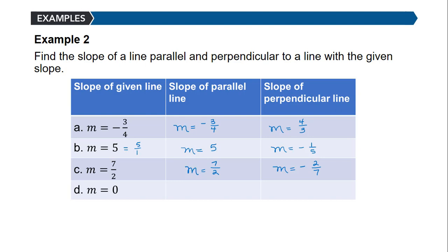If the slope of a given line is 0, the slope of a parallel line is also 0. For the perpendicular line, we change the sign and take the reciprocal. Since 0 is 0/1, the reciprocal is 1/0, which is undefined. So the slope of the perpendicular line is undefined — this is the case of a horizontal line (slope 0) whose perpendicular is a vertical line (undefined slope).